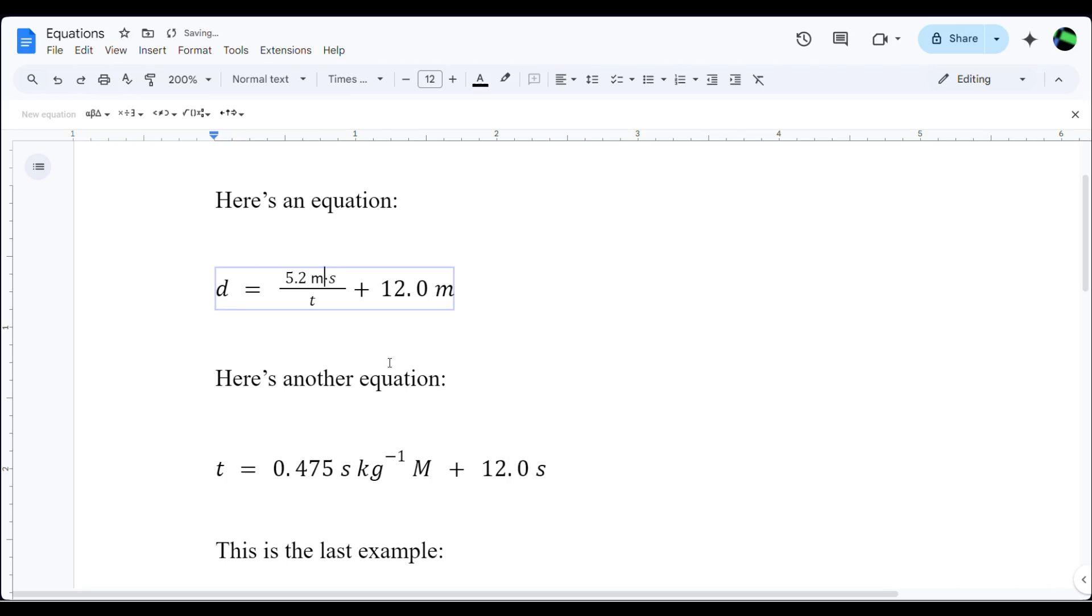Then I can get rid of my italicized M. This M represents meters. It should not be italicized because it's a unit, and now I have a non-italicized M.